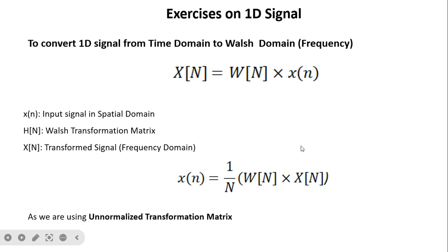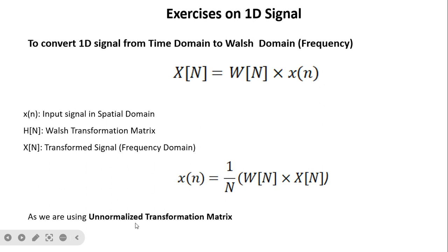Now we will see exercises on one-dimensional signals to convert a one-dimensional signal from the time domain to the Walsh domain. For simplicity, we are taking the unnormalized transformation matrix — we can take the normalized transformation matrix, but there is only a slight change in the formula. The forward transform formula is: X(n) = W(n) · x(n).